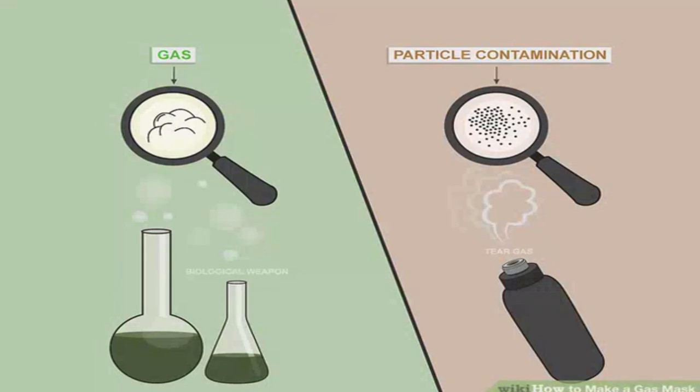Know the difference between gas and particle contamination. Tear gas is actually a dust that is sprayed into the air, whereas biological weapons are generally gases. While it is incredibly difficult and expensive to completely protect yourself against gases, you can easily create a barrier against particles at home. Toxic ash from volcanoes, tear gas, and dust are all particle contaminants.